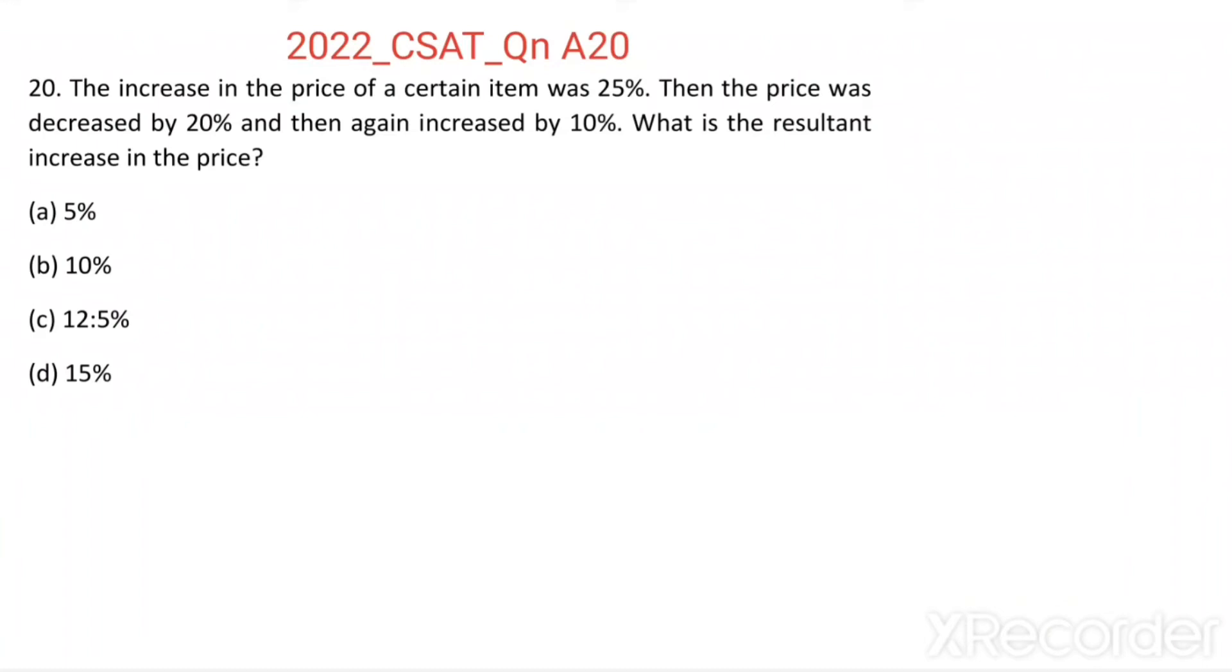Question 20. The increase in the price of a certain item was 25%. Then the price was decreased by 20% and then again increased by 10%. What is the resultant increase in the price?